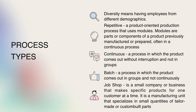The next topic is process types. Number one is repetitive: a product-oriented production process that uses modules — parts or components of a product previously manufactured, often in a continuous process. Number two is continuous: a process in which the product comes out without interruptions and not in groups. Number three is batch: a process in which the product comes out in groups and not continuously. Number four is job shop: a small company that makes specific products for one customer at a time, specializing in small quantities of custom-built parts.